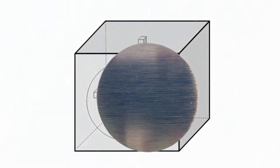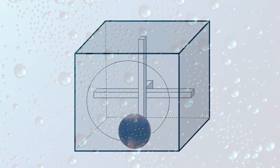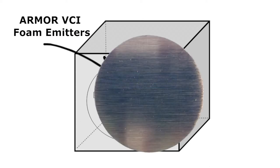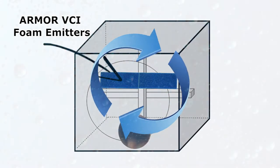We placed the disc marked Control in the container without any VCI foam pads. Then we placed the disc marked Armor inside the container along with our 2x10 MPI VCI foam pad.